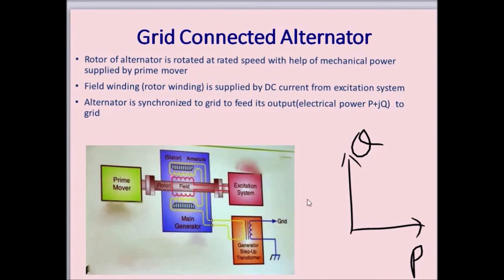In order to feed this active power and reactive power into the grid, the alternator has to be synchronized with the grid. This means the alternator stator winding voltage must be the same as the grid voltage, the phase sequence of the generated voltage must be the same as that of the grid, and the electrical frequency of the grid must be the same as the electrical frequency of the generated voltage.